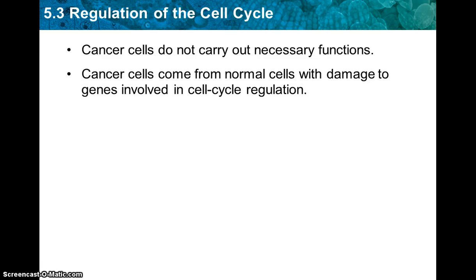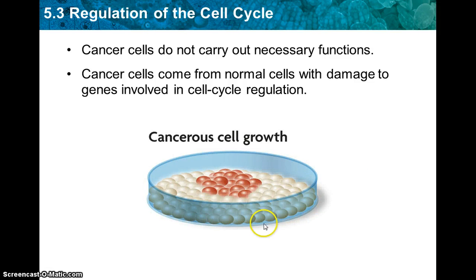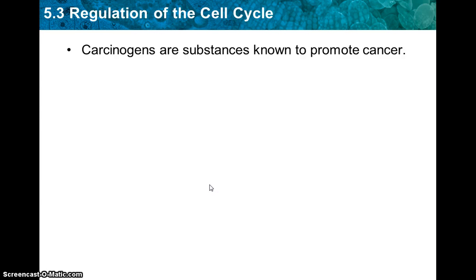Cancer cells do not carry out necessary functions. Cancer cells come from normal cells with damaged genes involved in cell cycle regulation. Carcinogens are substances that promote cancer — from cigarette smoke to many other things; pretty much everything is said to cause cancer nowadays.